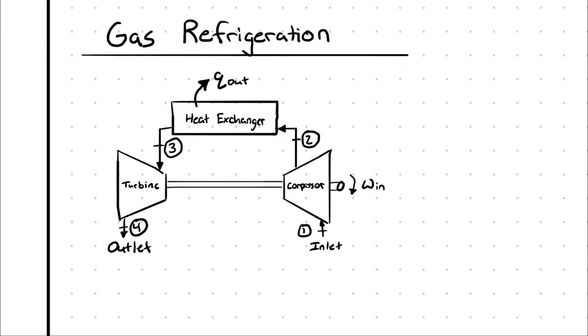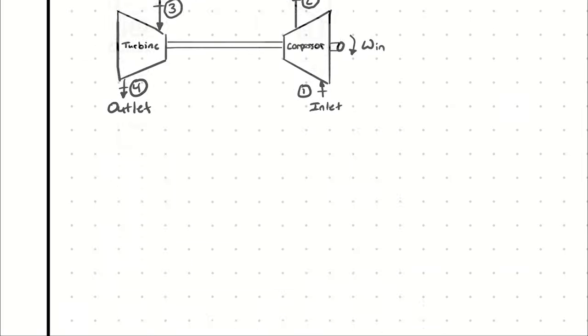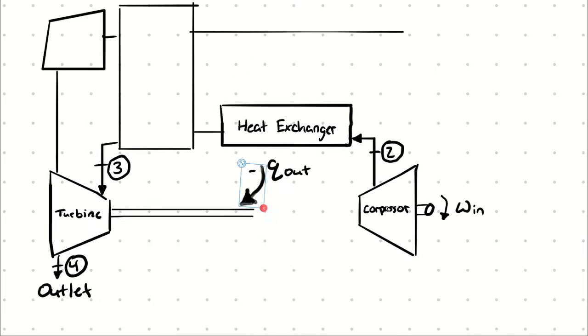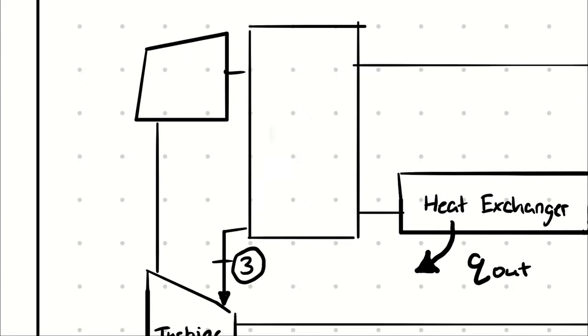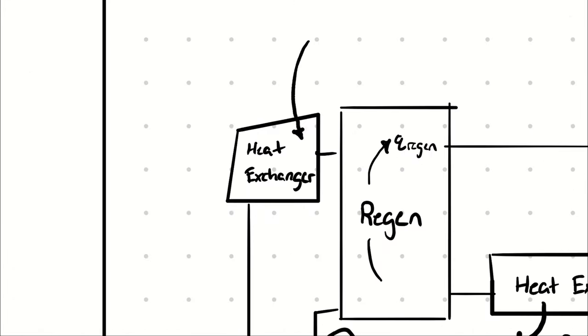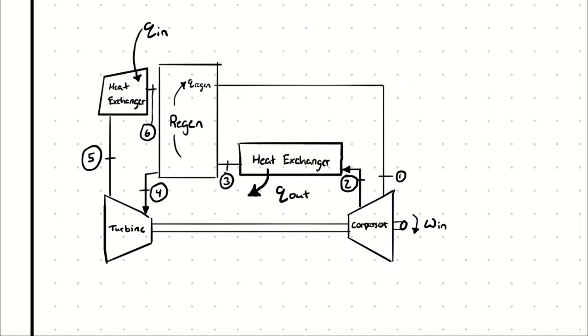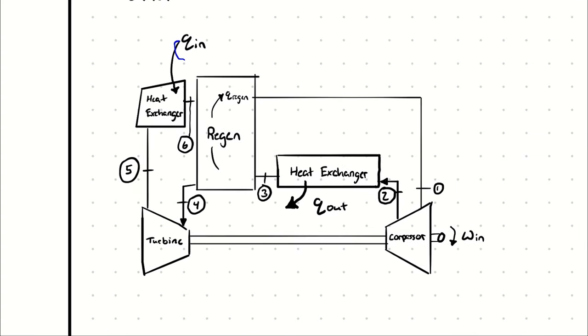We can improve the efficiency of a gas refrigeration cycle a little bit by adding in a regenerator. The downside is this isn't really able to be used in the same direct air conditioning style as the open gas refrigeration cycle. Instead, you are pulling heat out of a refrigerated space through a heat exchanger.